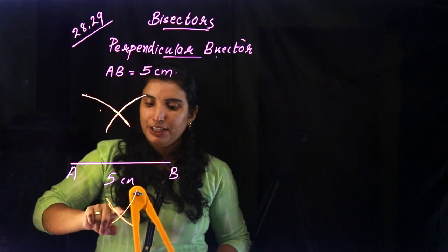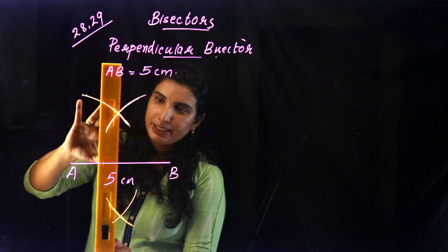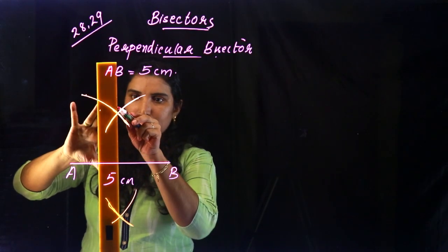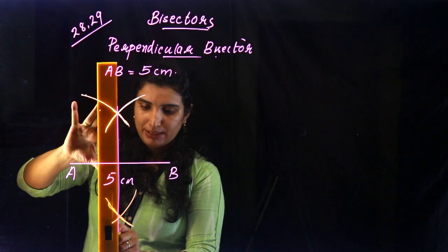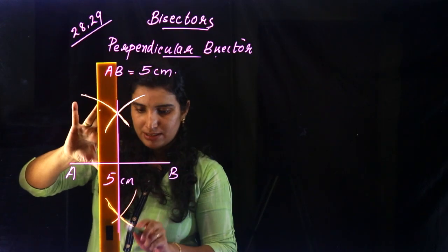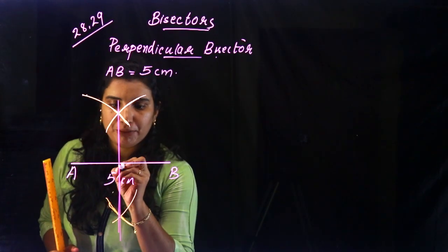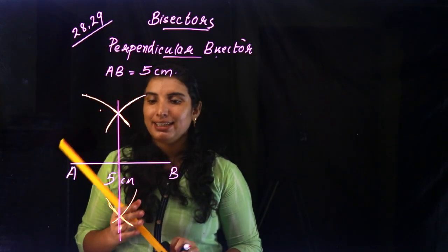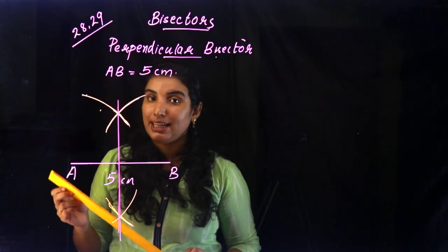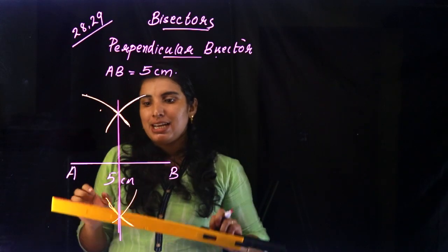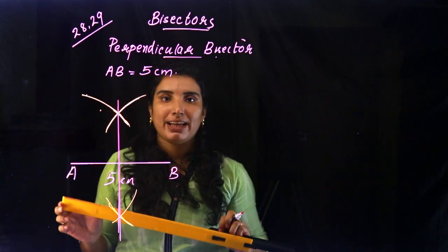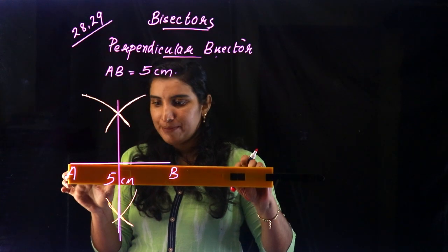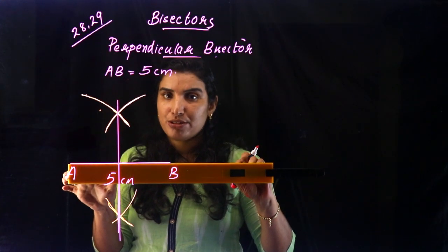We have two intersection points. Let's join those points. Now we will join the point here and take the scale to measure it. We will take AB — 5 cm. Then one item will take the midpoint at 2.5 cm. We will take the scale and measure 2.5 cm.